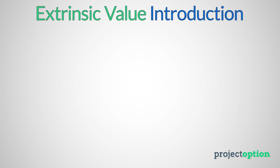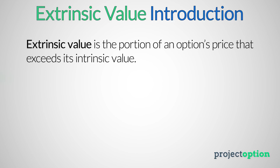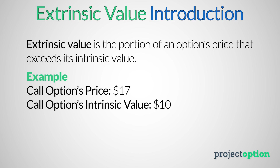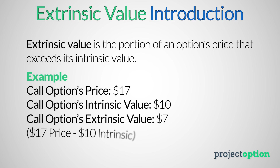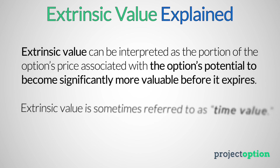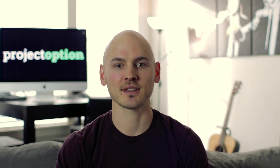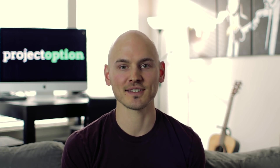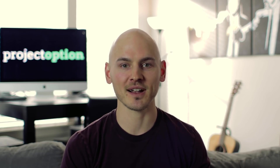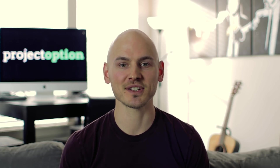Extrinsic value is the portion of an option's price that exceeds its intrinsic value. For example, if a call option has $10 of intrinsic value but is trading for $17, that additional $7 is considered extrinsic value. Extrinsic value can be interpreted as the option's potential to become more valuable before it expires — it's associated with the potential for the option to gain additional intrinsic value before reaching its expiration date.